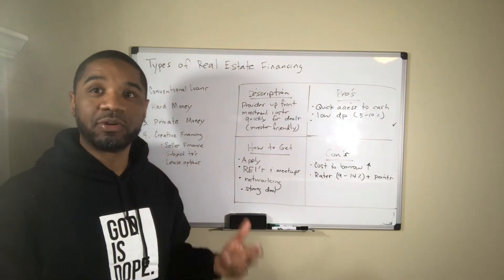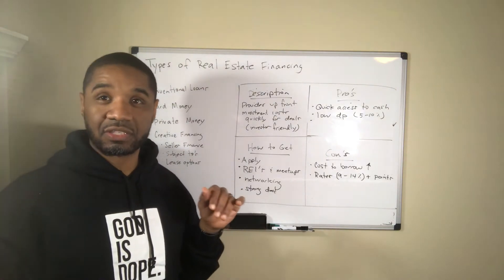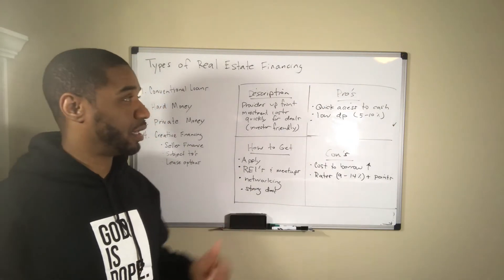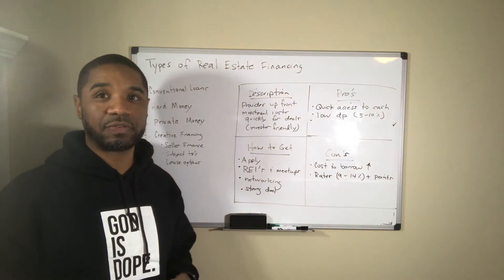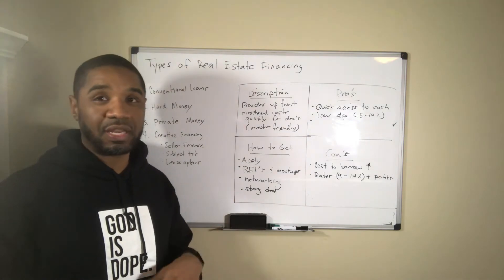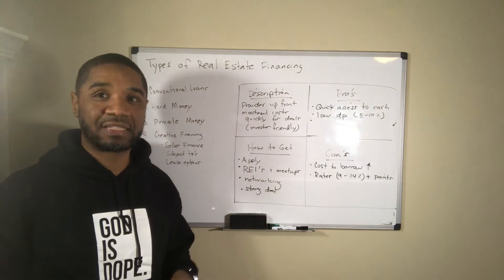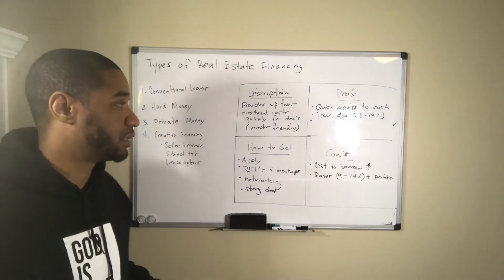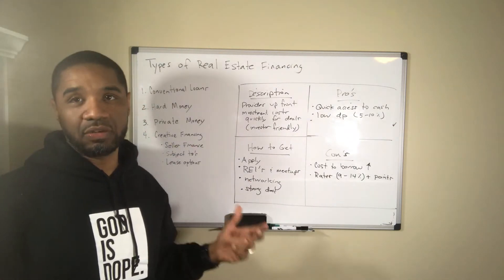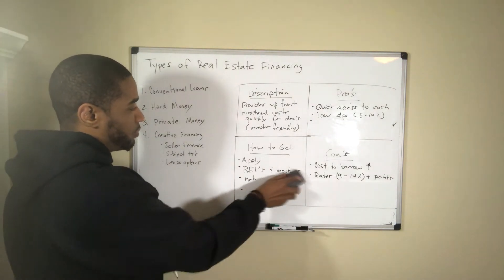People use hard money lenders every day because sometimes you can find a deal where you buy it very low, fund your rehab costs — that's another pro: you can get all your rehab costs funded — and then turn that property around quickly. Many flippers are looking at three months to a year to turn the property around, paying off this high interest rate fast and cashing out with a lot of money. But if you don't have a strong deal you can really lose out with a hard money lender.